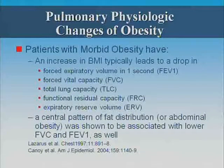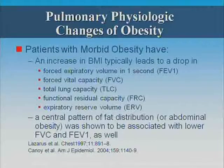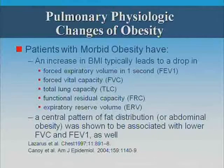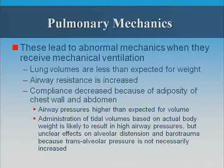Increased BMI typically leads to a drop in all those lung measures. Also, if you have a central pattern of fat distribution — not just morbid obesity overall, but central obesity with thin legs, thin arms, maybe a thin chest but a lot of central obesity around the belly — that also decreases FVC and FEV1.